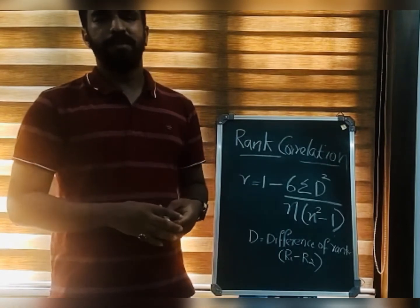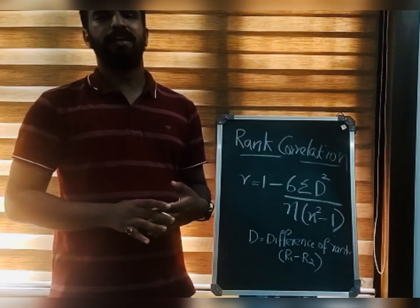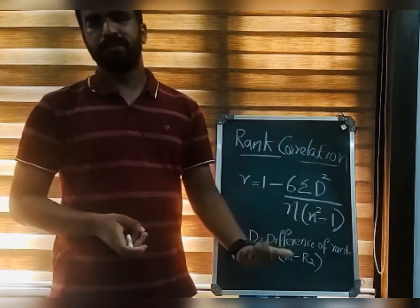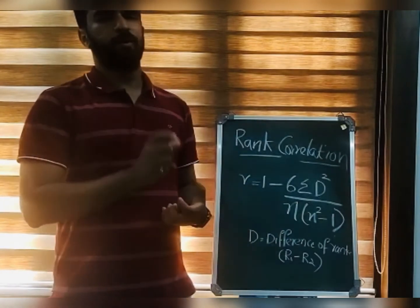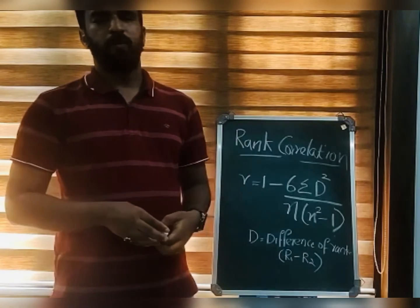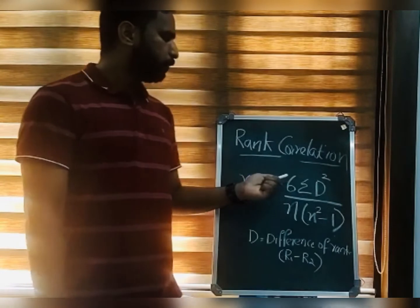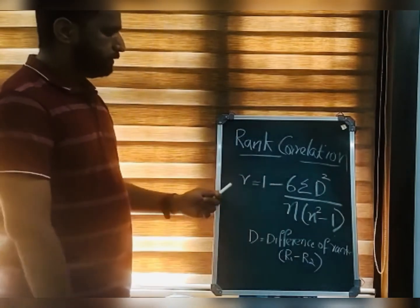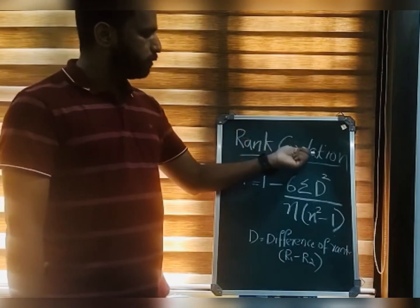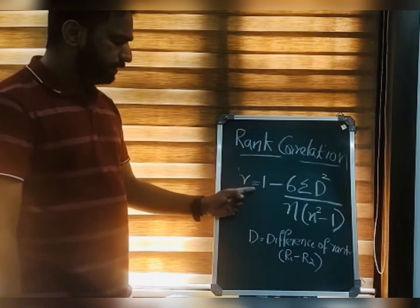In simple terms, in case of qualitative variables, we are using rank correlation. That is about the introduction of rank correlation. Then we can move on to the equation, the formula of rank correlation. This term rank correlation is also denoted by the letter r, small letter r, that is equal to 1 minus 6 sigma D square divided by n into n square minus 1.